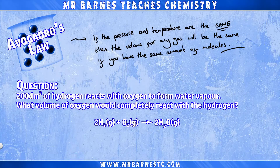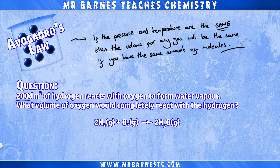I have a question here that says I have 200cm³ of hydrogen and it reacts with oxygen to form water vapor. What volume of oxygen would completely react with the hydrogen? I've got a balanced equation of 2H₂ + O₂ → 2H₂O.